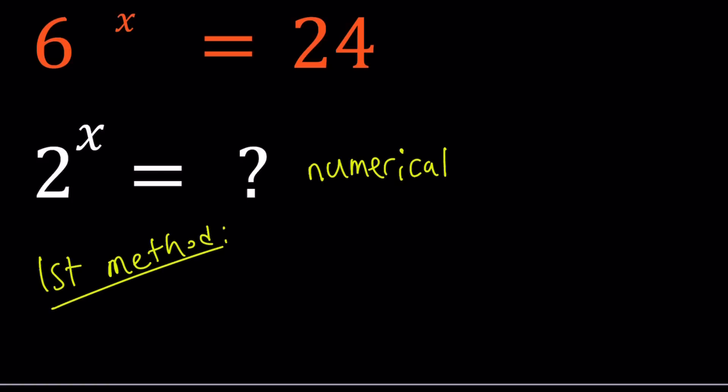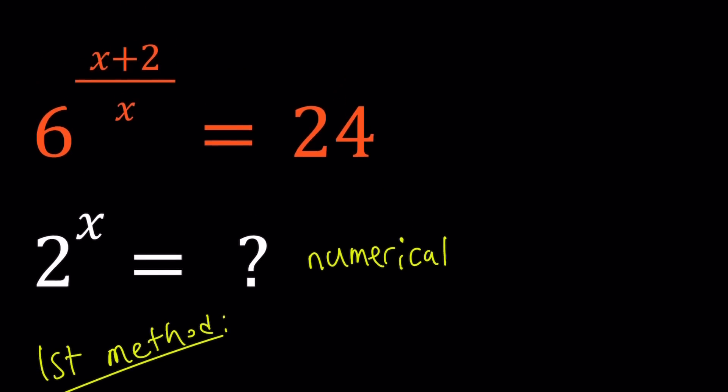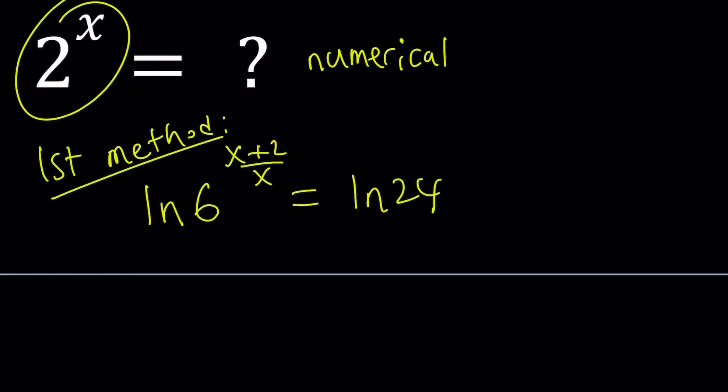My first method is almost always ln-ing both sides. It's logging both sides with base e, the natural log. So if you take natural log of both sides, ln 6 to the power x plus 2 over x equals ln 24. And my goal at the end is find 2 to the power x.